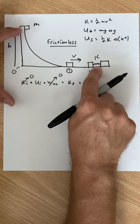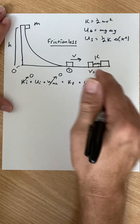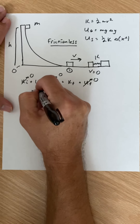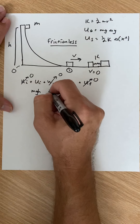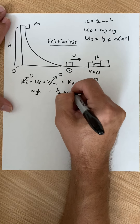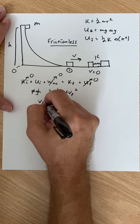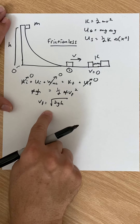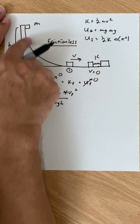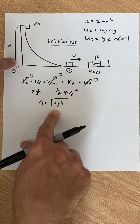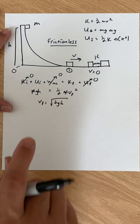So the initial potential mgh equals the final kinetic energy, one-half mv-final squared. The masses cancel, and I get v-final equals root 2gh. This should look familiar — it's the same speed I'd get if I dropped the mass off a cliff of height h. Right before it hits the ground, it's going root 2gh. That's really interesting.